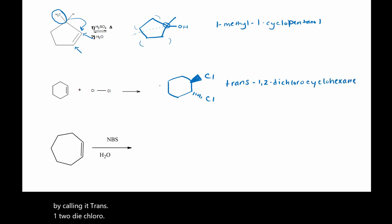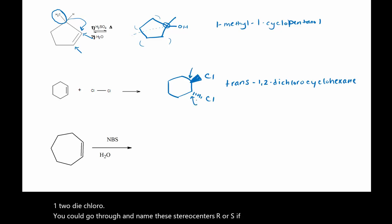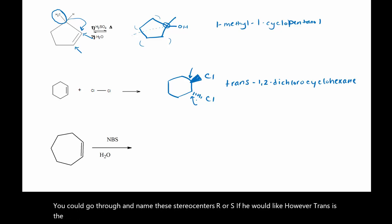Now you could go through and name these stereocenters R or S if you would like. However, trans is the easiest way to go about it when you have a cyclic compound.